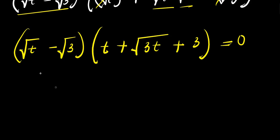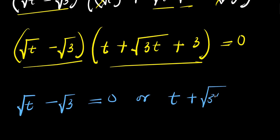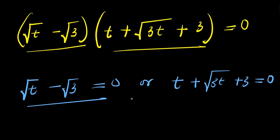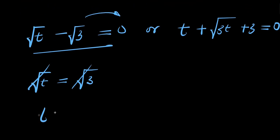At this point we equate each bracket to 0. So we have root t minus root 3 equals 0, or t plus square root of 3t plus 3 equals 0. To solve the first one, we move root 3 over: root t equals root 3, then squaring both sides cancels the square roots and we get t equals 3. So this is our first solution, t₁ equals 3.